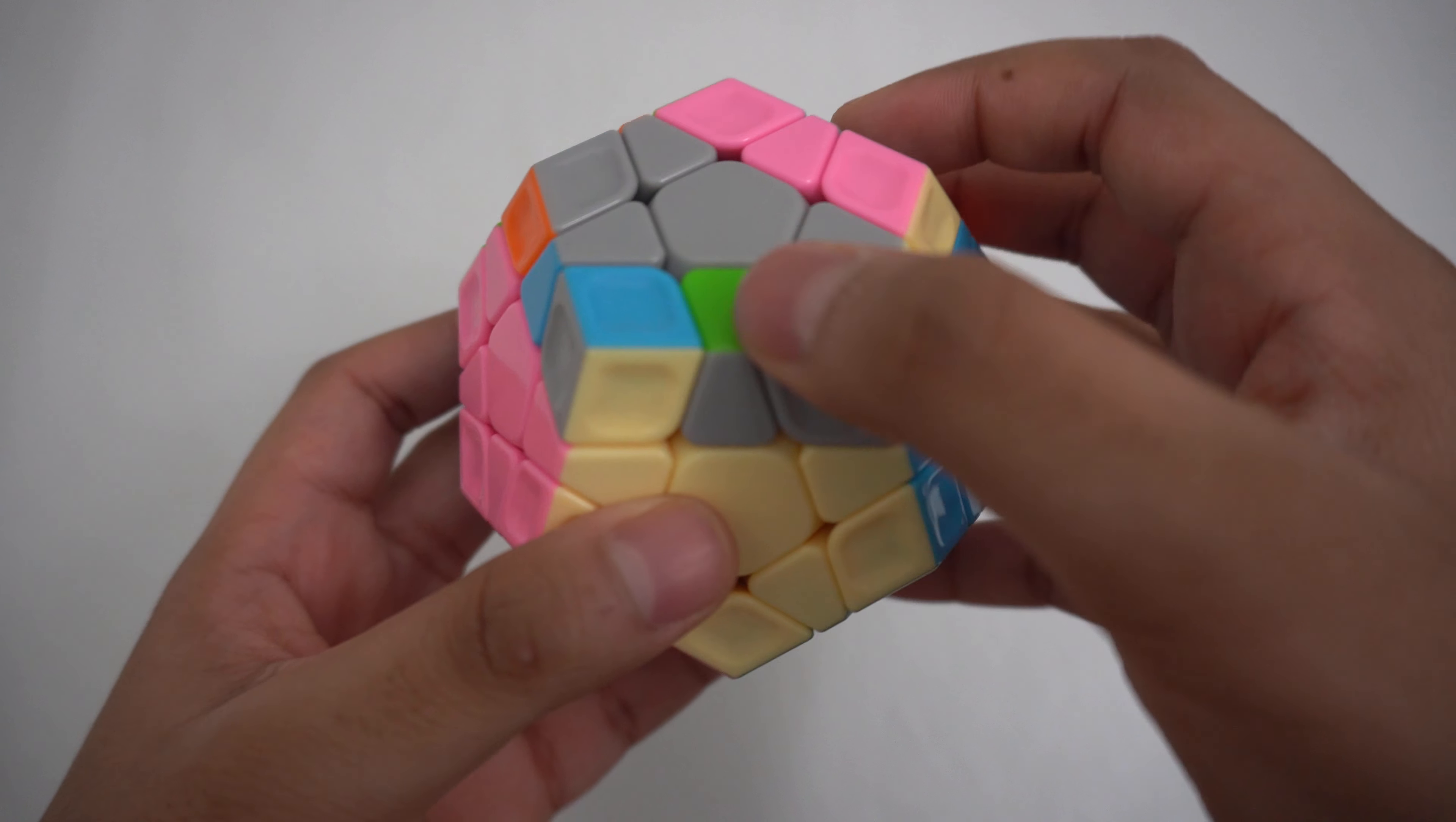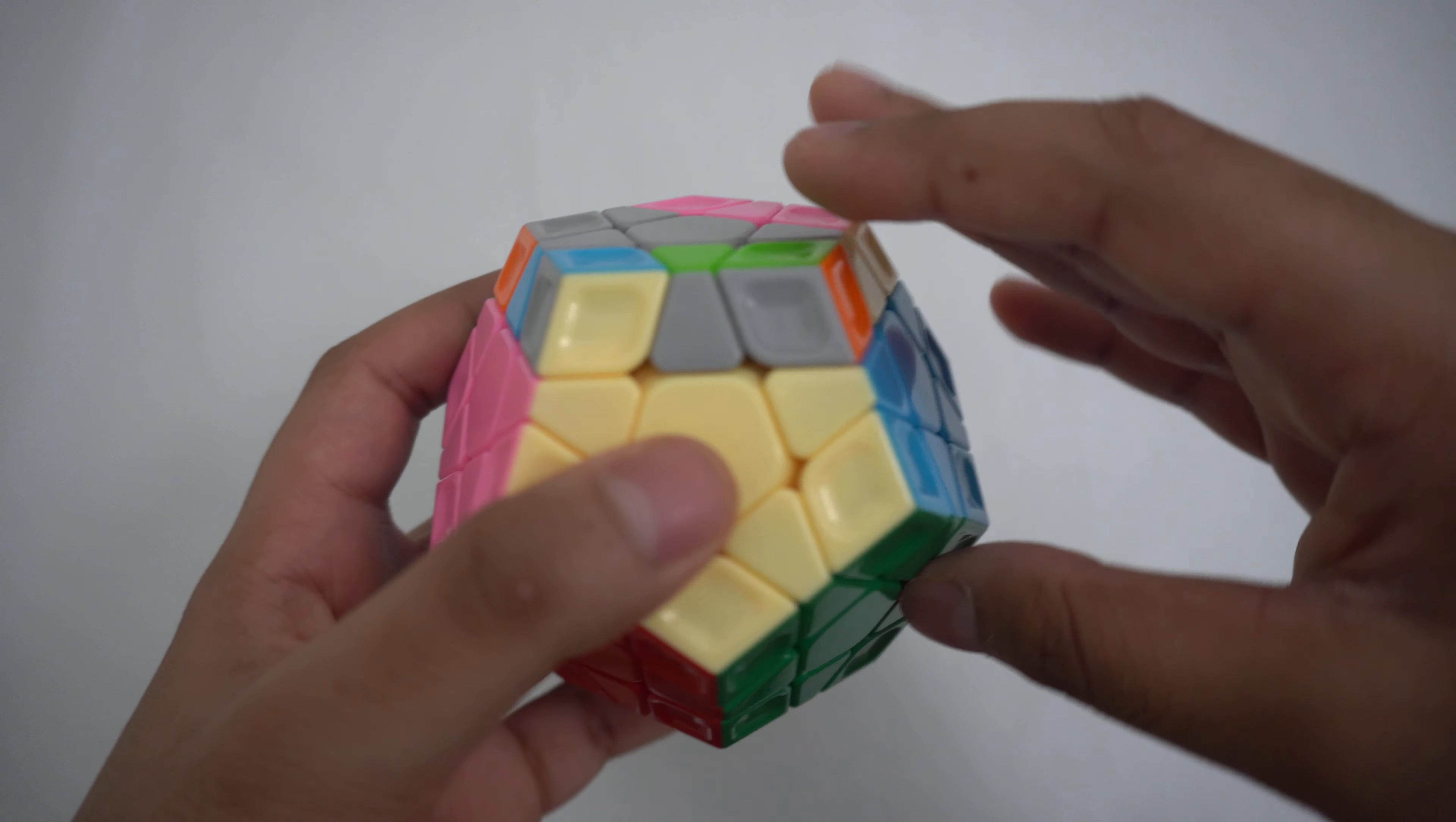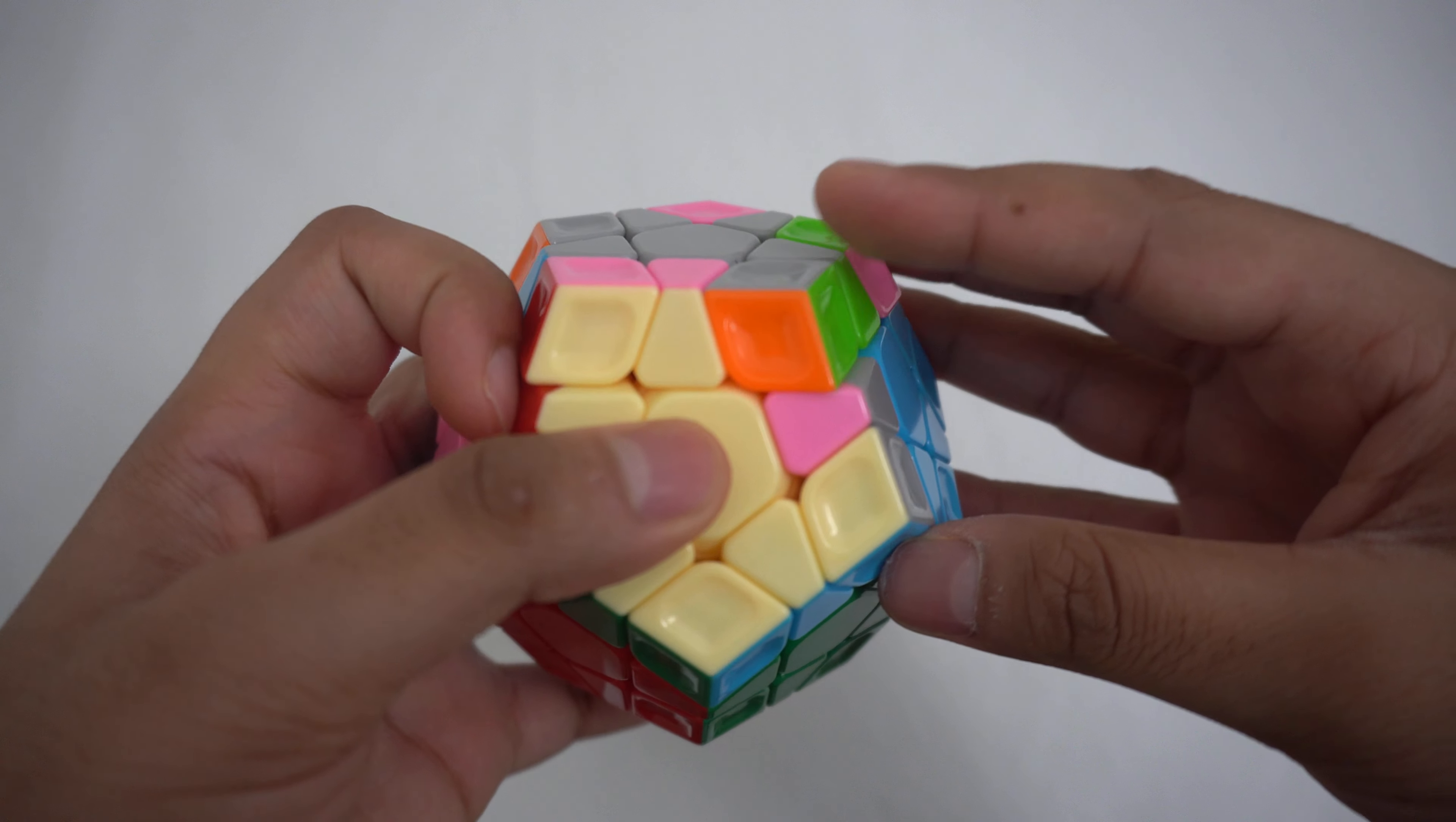To flip two edges that are opposite from each other, put one in front of you and the other on the back right and do this algorithm. F, R, U, R prime, U prime, F prime.